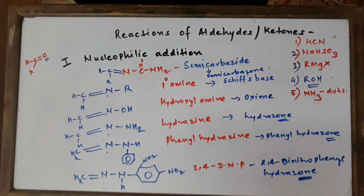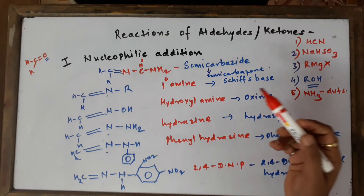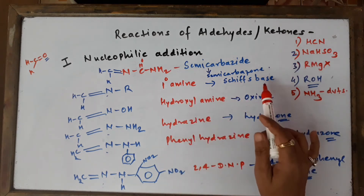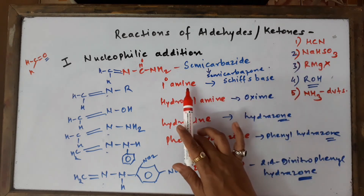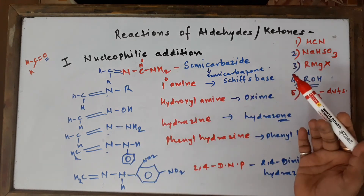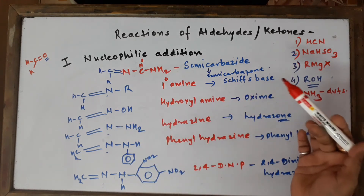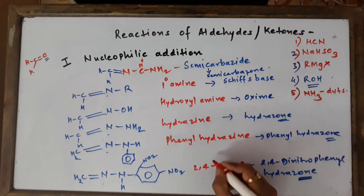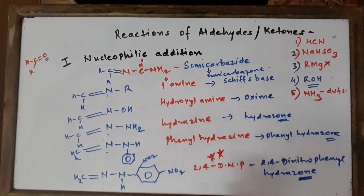One-mark questions will be asked on these. The formulas of the reagents are not that challenging - just practice at least two or three times and you'll learn them. Remember: when a primary amine reacts with an aldehyde or ketone we get a Schiff's base, also called a substituted imine. These are all one-mark questions. 2,4-DNP is very important.